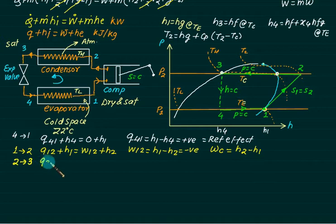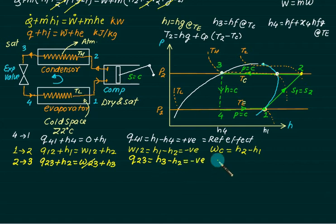Q23 is the condenser process. Q23 plus H2 equal to W23 plus H3. The heat exchanger has no moving parts, so W23 will be equal to 0. We get Q23 is H3 minus H2. H3 is less than H2. This one is negative quantity. It means that heat is rejected. This is called as heating effect.